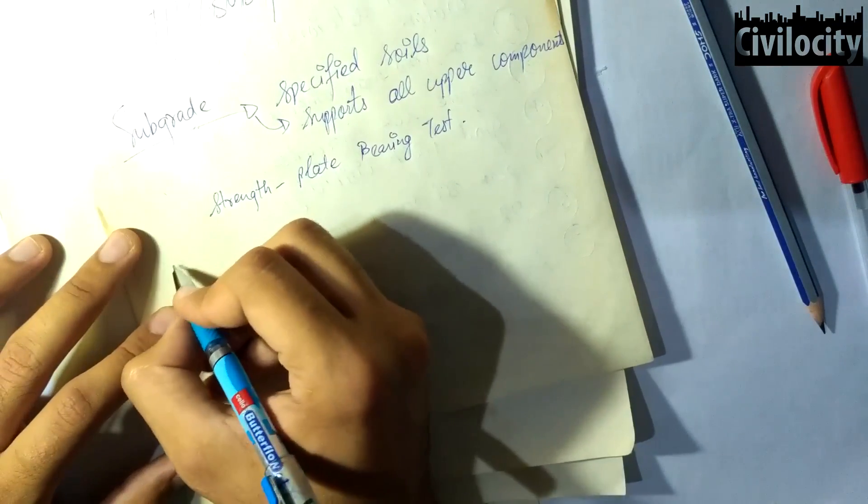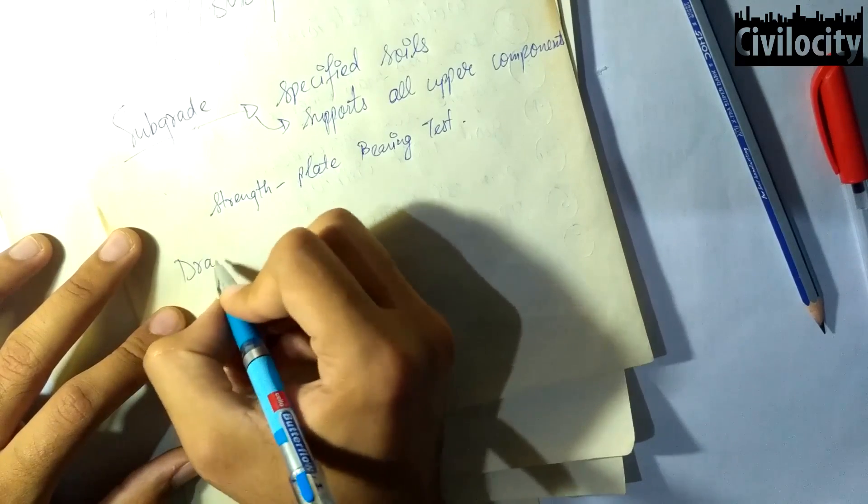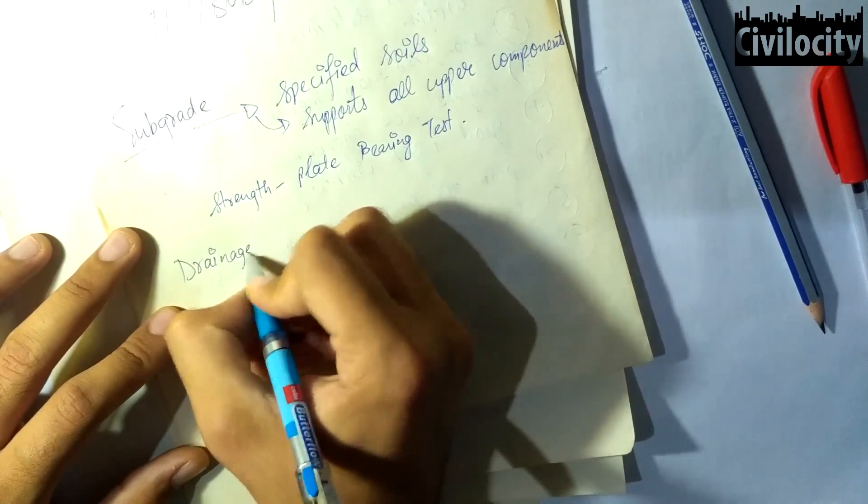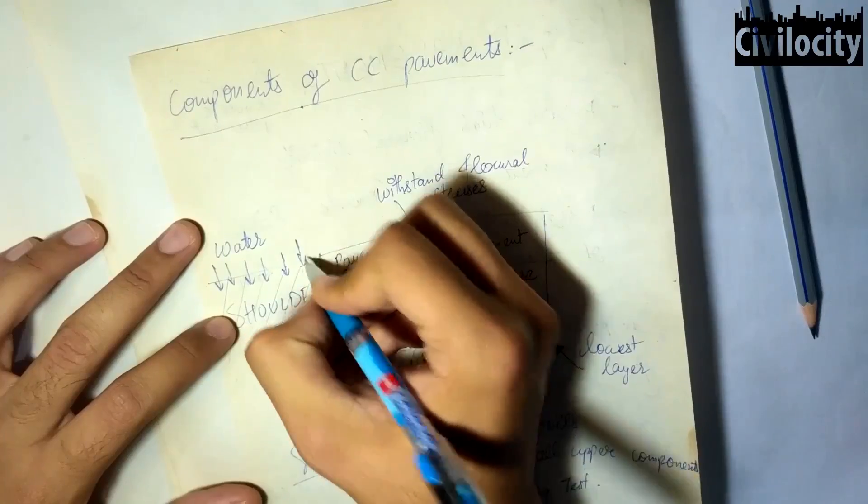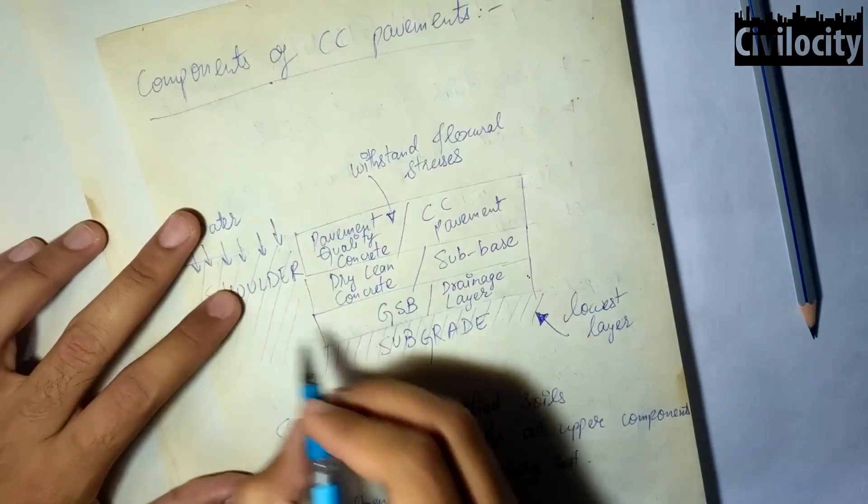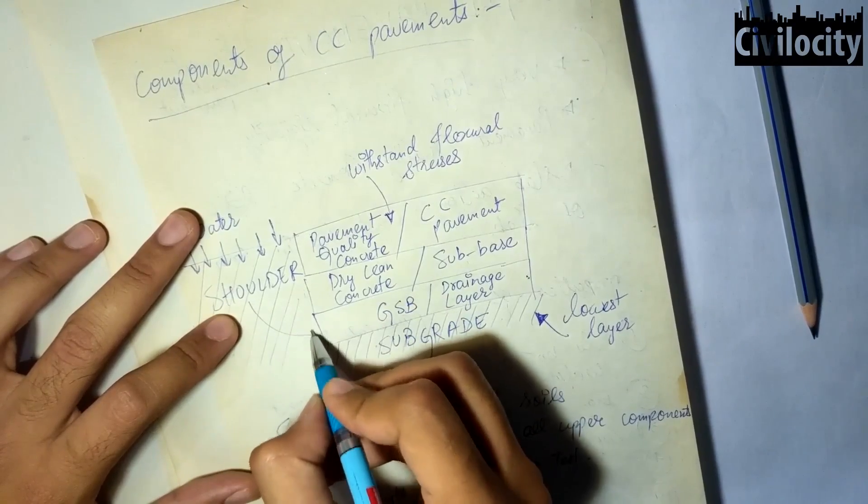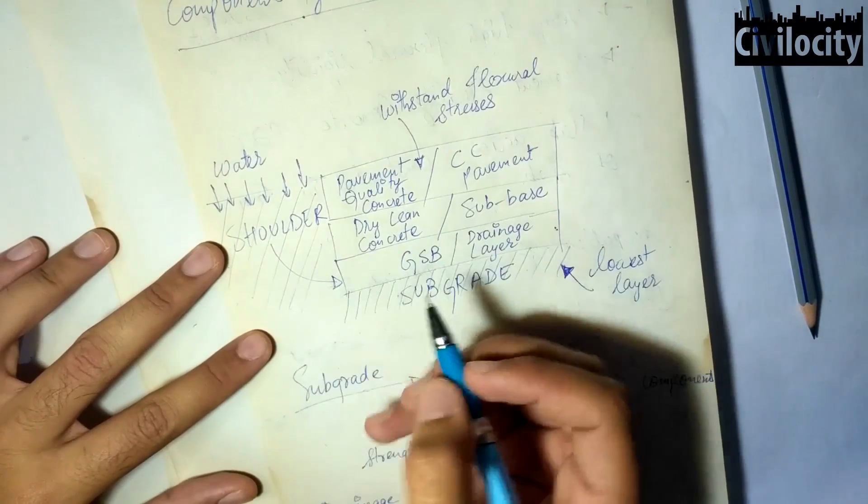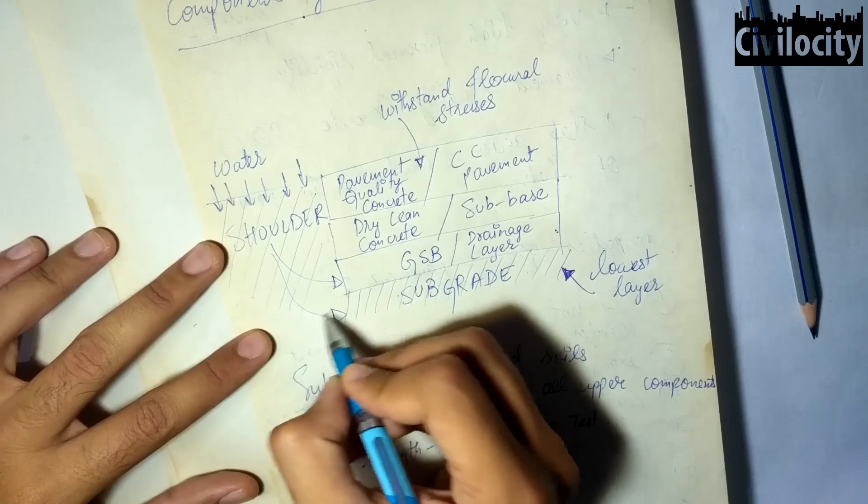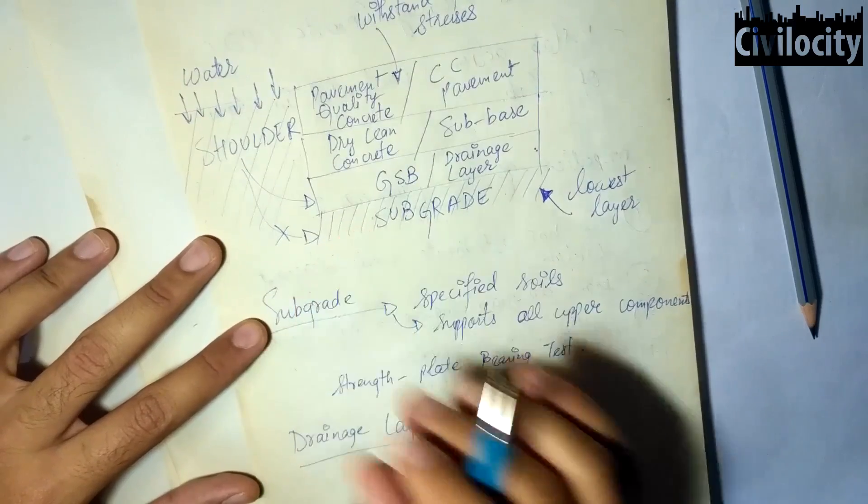And lastly the strength is calculated by the plate bearing test using large diameter plate. Now let's talk about the granular subbase or drainage layer. We don't want our subgrade to get deteriorated due to water coming from the shoulders or anywhere else. We want this water to get immediately rinsed off inside the pavement without deteriorating the upper or lower layers.